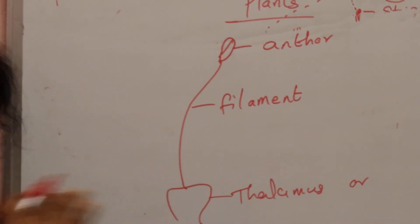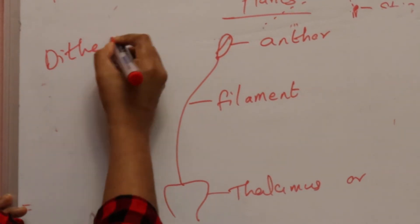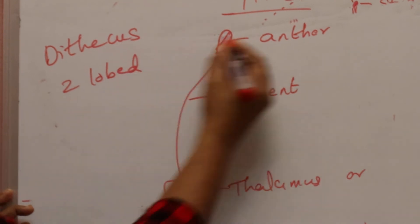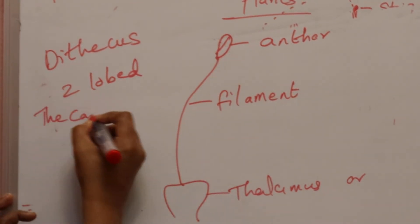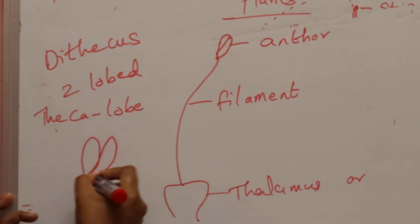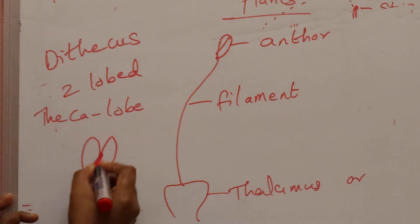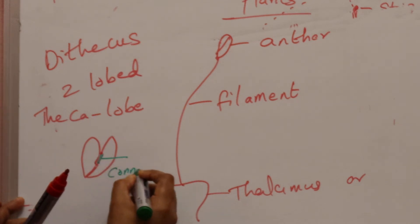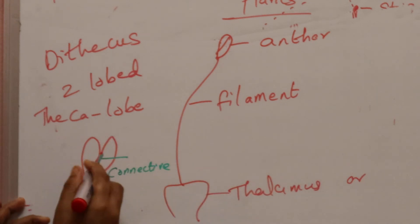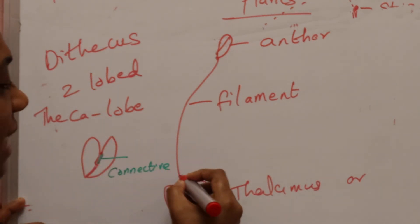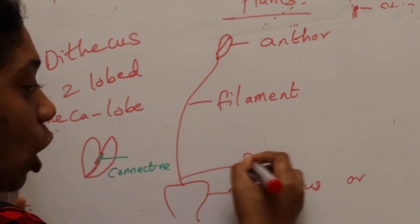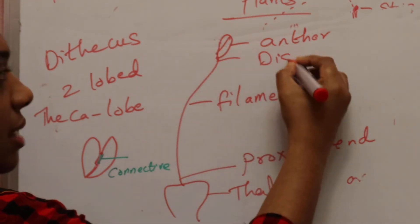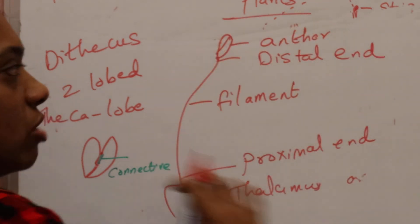Majority of flowers are dithecous. Dithecous means two-lobed — theca means lobe. The two lobes are connected at the center by a tissue called connective. The end attached to the thalamus is the proximal end, and the upper part is the distal end. In transverse section, each lobe contains two pollen sacks, so a dithecous anther has four pollen sacks total. Inside pollen sacks are pollen grains, which after maturity migrate to the stigma, then a pollen tube develops, and fertilization takes place.